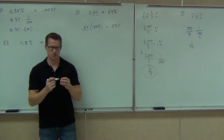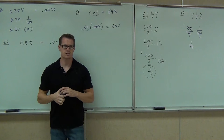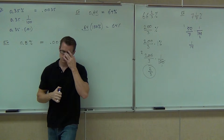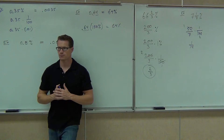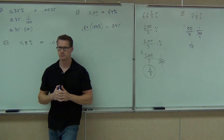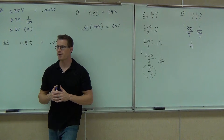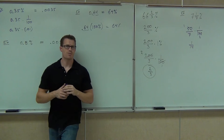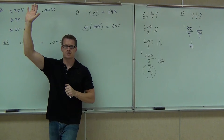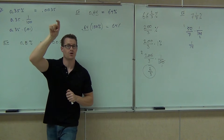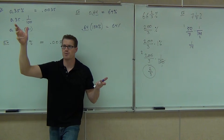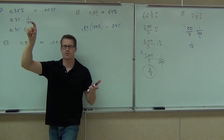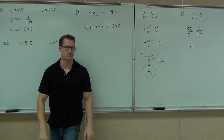Try that on your calculator. Take 0.64, multiply by 100. What did you get? 64. Just keep in mind, you multiplied by 100% — that's why we have that percent up there. How many people understood that? So basically, you're multiplying by 100 parts. Those 100 parts right there signify a percentage.